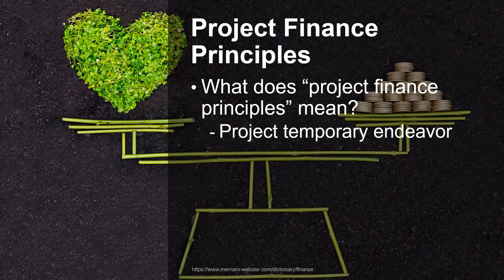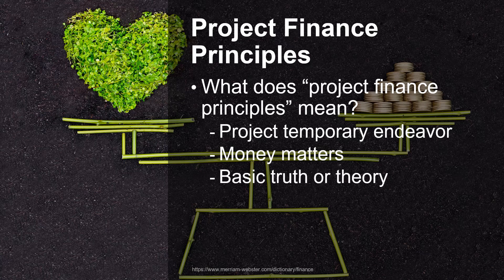The first word is 'project.' Projects, as we know from the PMBOK Guide, are temporary endeavours undertaken in order to create a product, service, or result. 'Finance,' according to the Merriam-Webster dictionary, refers to the system that includes the circulation of money, the granting of credit, the making of investments, and the provision of banking facilities — in general, it means dealing with money matters. And a 'principle' is a basic truth or theory; it is fundamentally a generalisation that is accepted as true and can be used as a basis for reasoning or conduct.